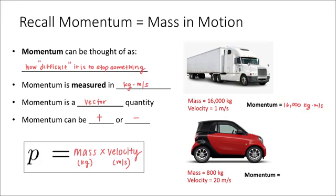The smart car is one twentieth of the mass of the 18-wheeler — it's only 800 kilograms — but it's traveling at a velocity that is 20 times as great: 20 meters per second. If we multiply those two together, we actually get 16,000 kilogram meters per second as well. I'm trying to illustrate the idea that momentum is not just how big something is, but also about how fast it's going. The 18-wheeler and the smart car are equally hard to stop.